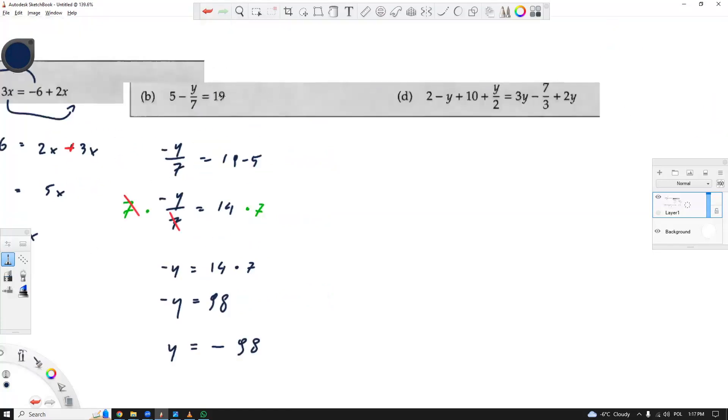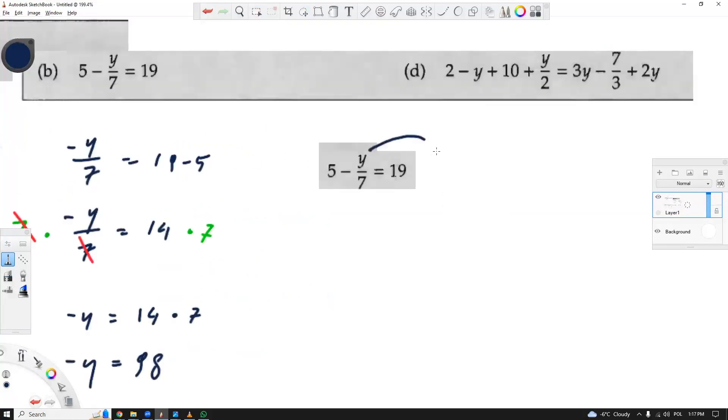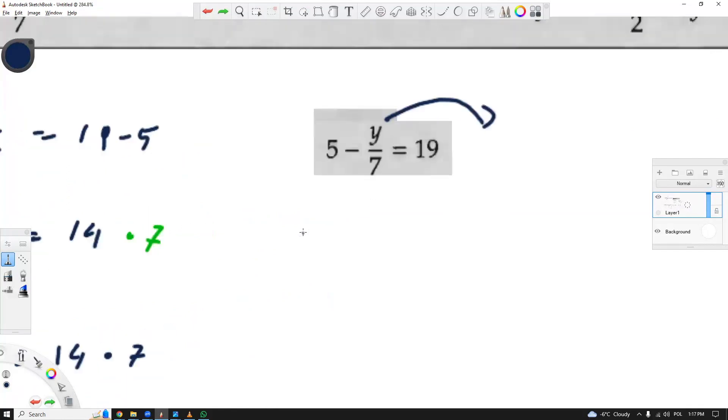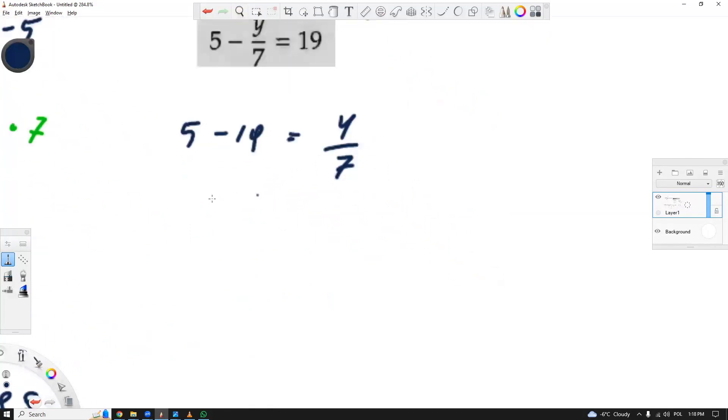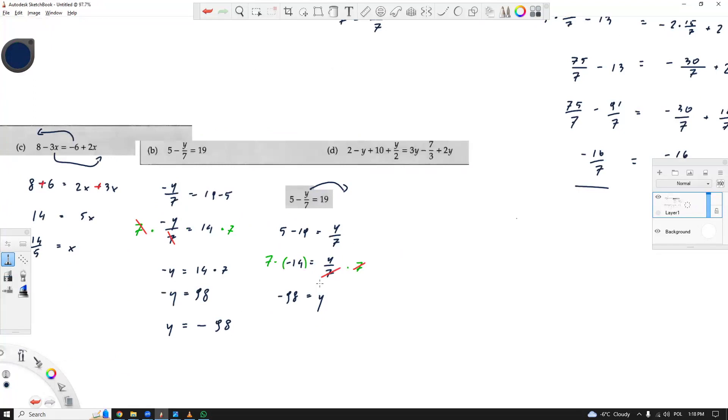Another method would be to move this first and this at the same time. So I'm having something like 5 minus 19 equals positive y over 7. So now I'm getting negative 14 equals y over 7. And then I multiply times 7. And then I'm getting negative 98 equals y. Sometimes it's faster, but it kind of depends on you how quickly you want to solve it. It's not that much of a difference, both are correct.